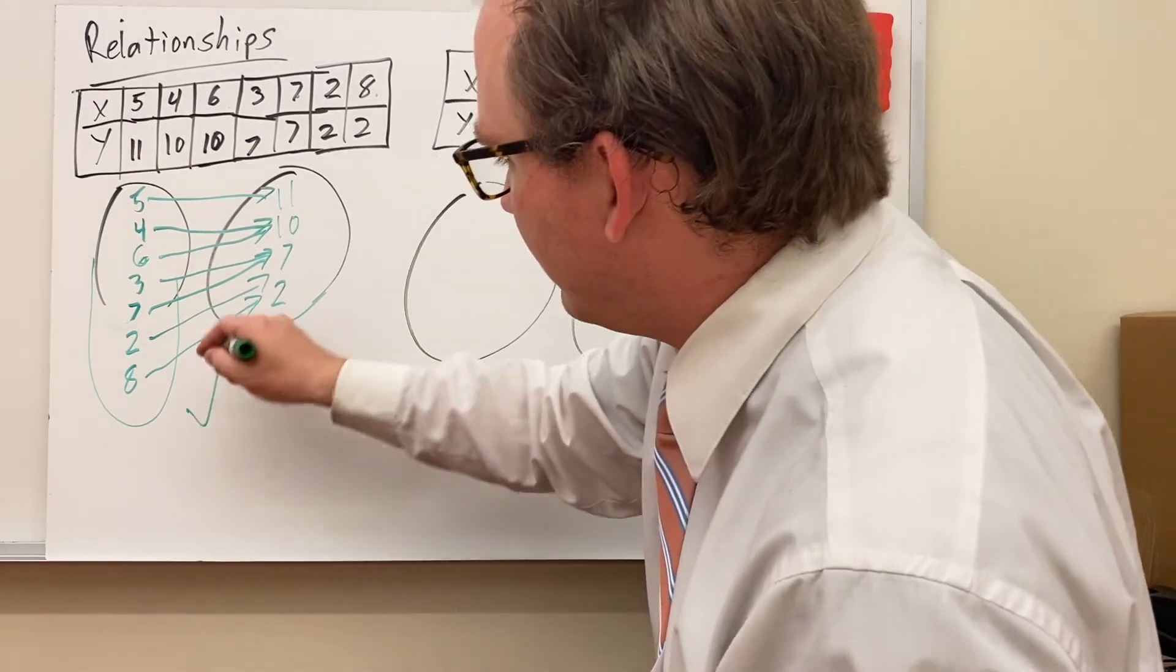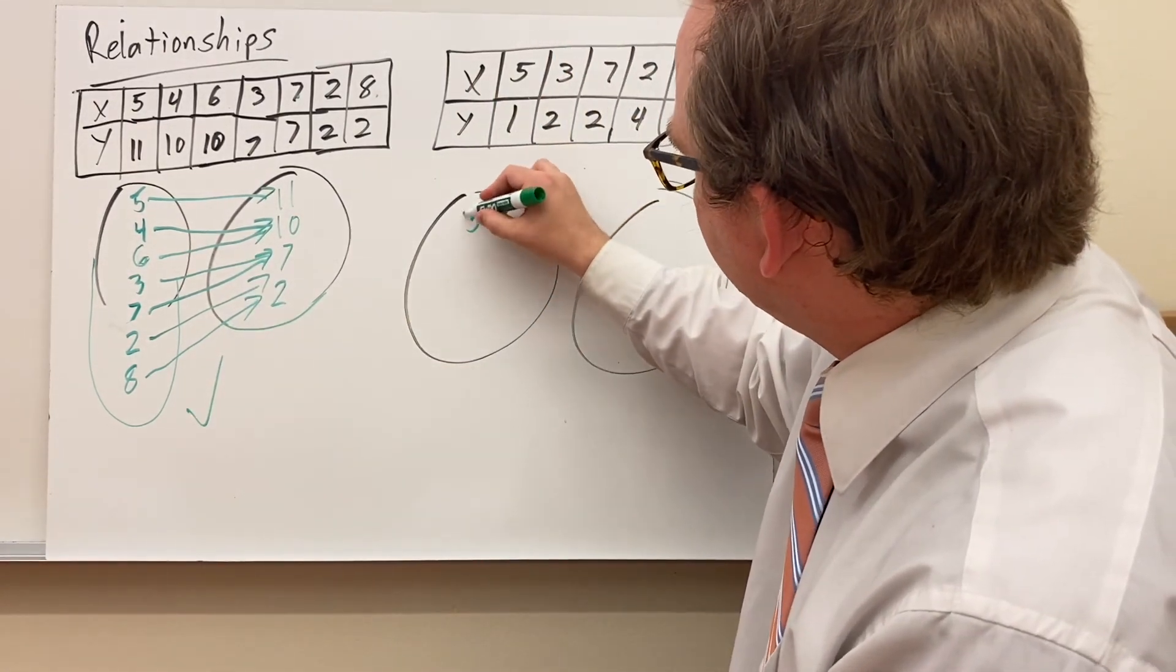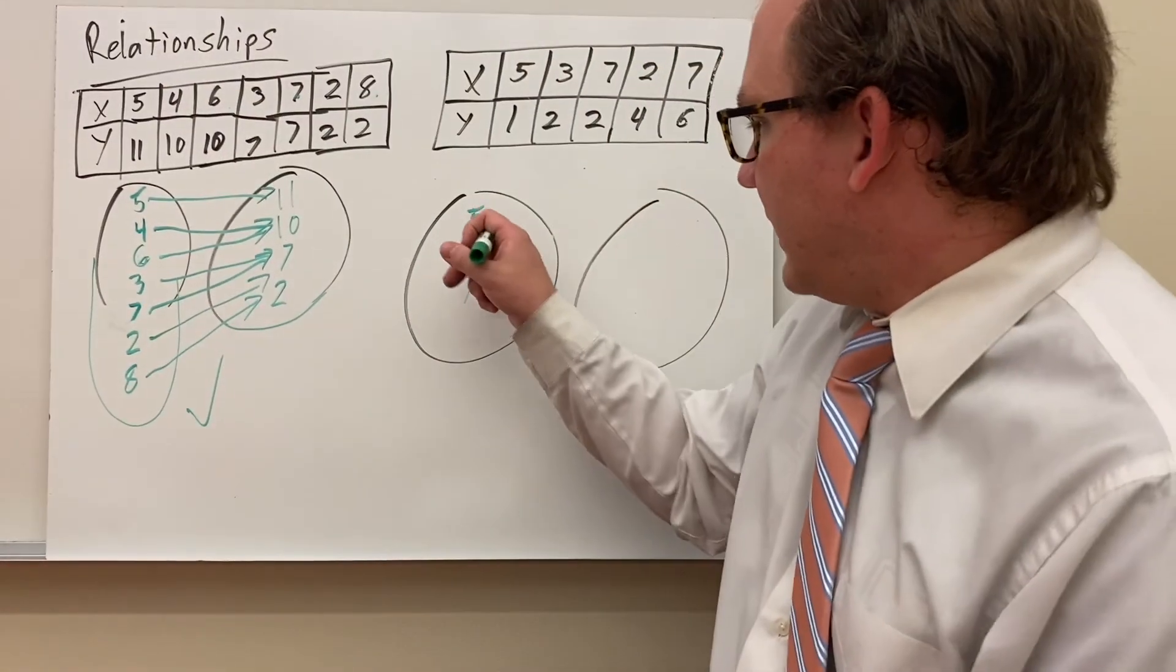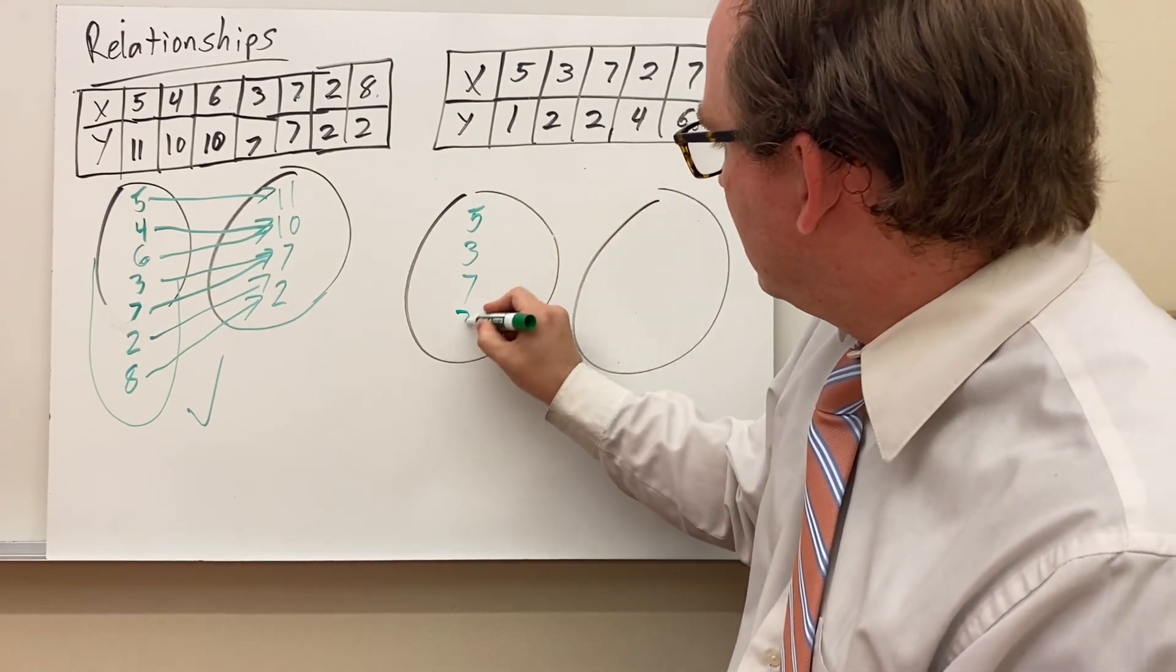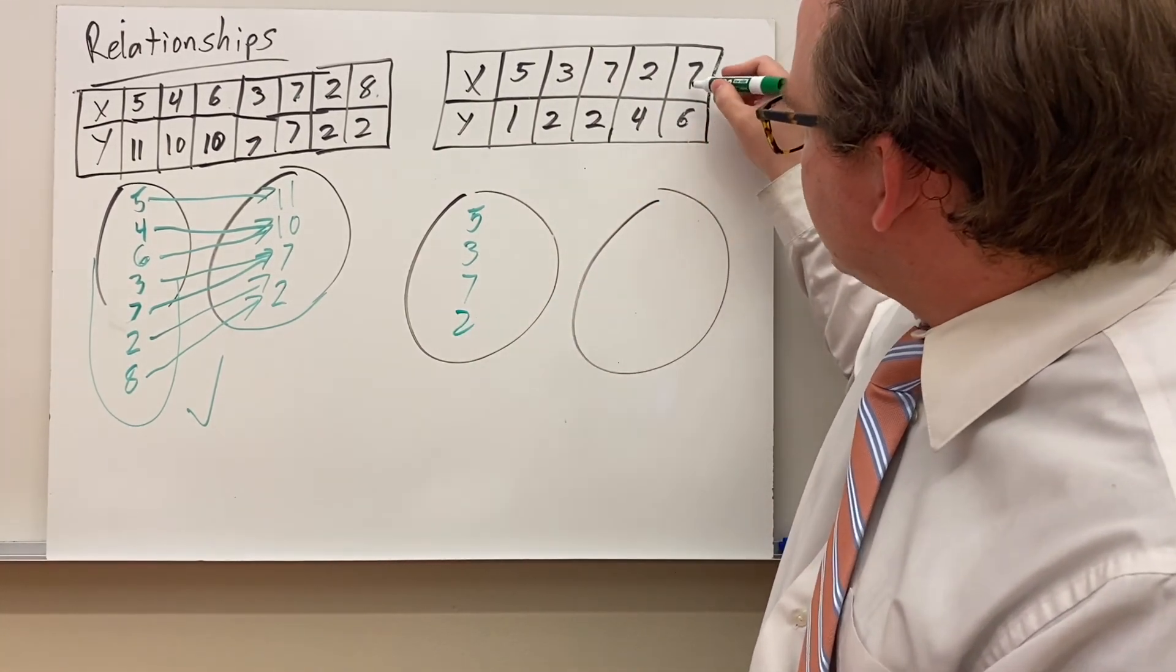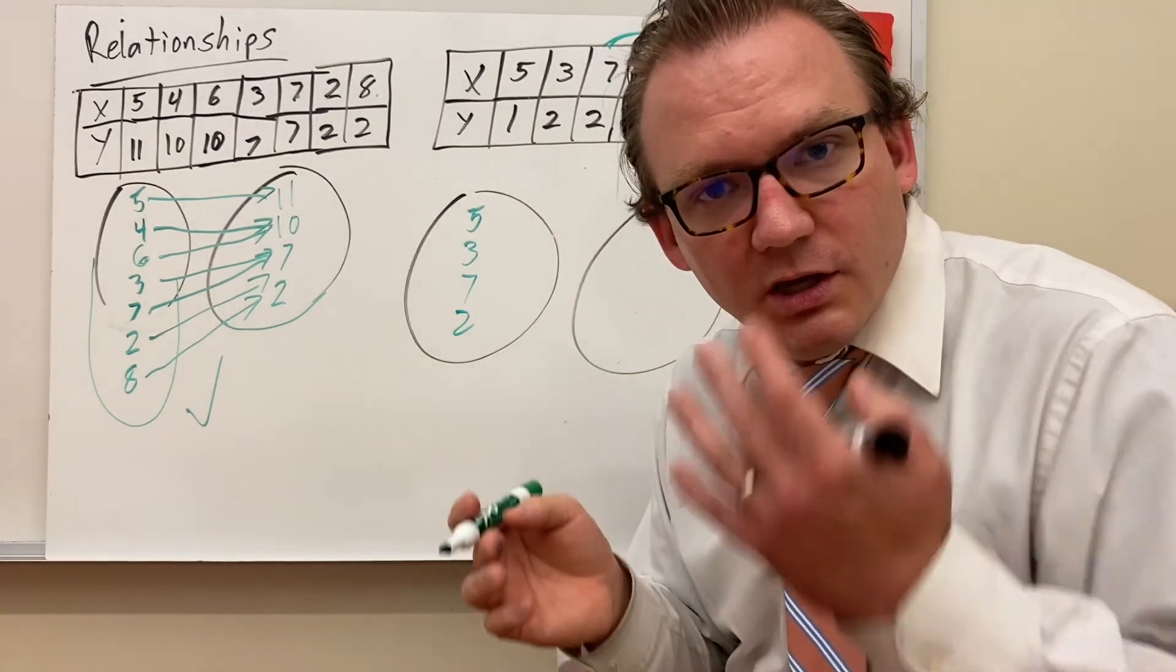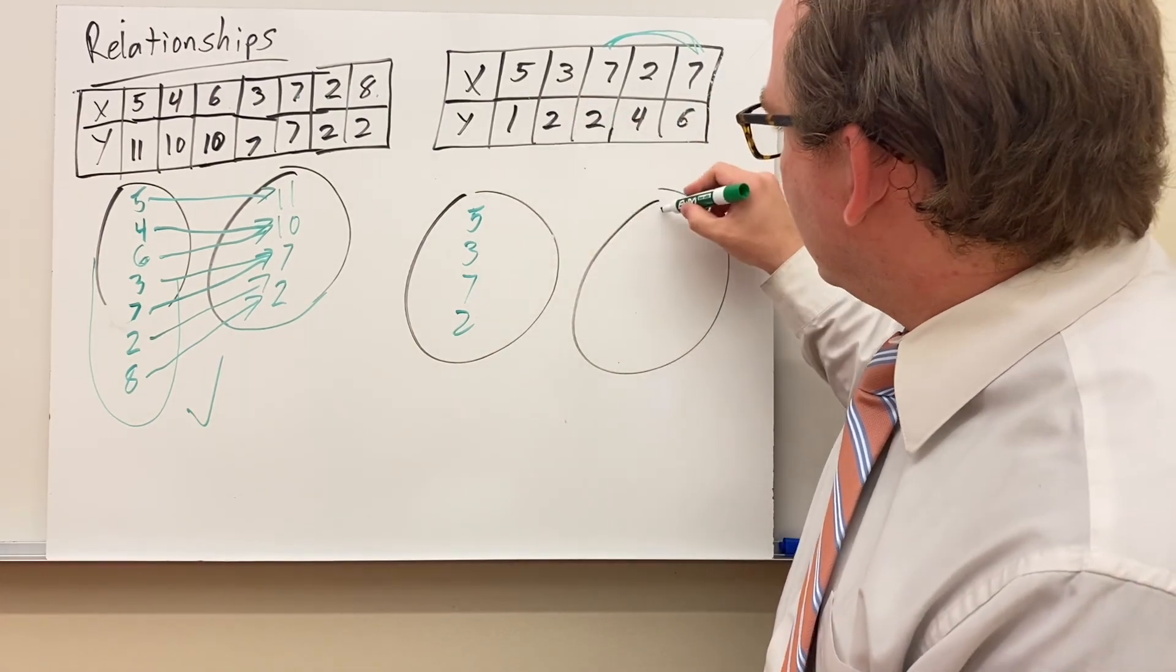This one here, my x-values are 5, 3, 7, 2, and 7 again. So as soon as I see that I have the same x-value repeating, it's probably not a function. Since I have a repeating x-value, I come over here. My y-values are 1, 2, 2 again, 4, and 6. Y-values can repeat. Just the x-value you don't want to repeat.